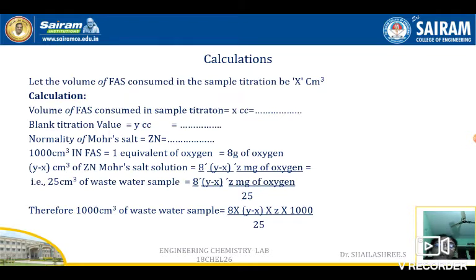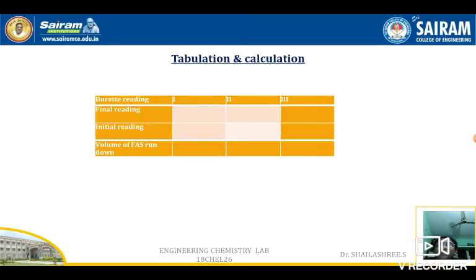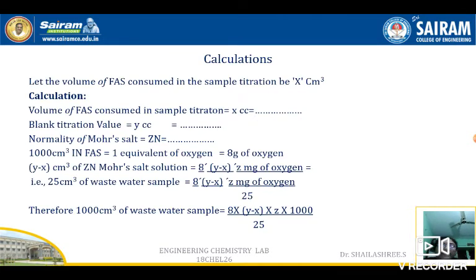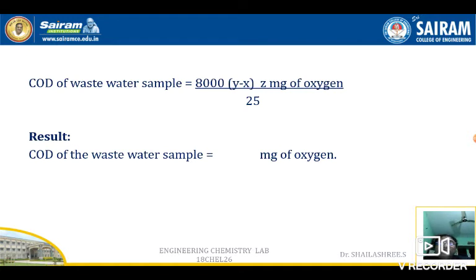Y is the blank titration value given to you, X is your burette reading, and Z is the normality you calculated. You have to do this step: 8 × (Y − X) × Z × 1000 / 25. If you do this, you will get the COD of the wastewater sample. Remember the final step of the calculation: 8000 × (Y − X) × Z / 25. The COD of the wastewater sample equals dash milligrams of oxygen per litre.